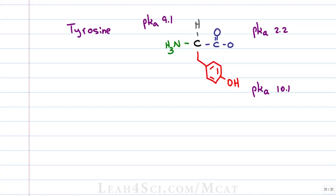To find the PI, we need to know exactly where the molecule will have a net charge of zero. We rank the pKa values from low to high: 2.2, 9.1, and 10.1. Remember: when the pKa is greater than the pH, the pKa grabs the proton for the molecule; when the pH is greater than the pKa, the solution grabs the proton from the molecule, meaning it's deprotonated. Comparing what the molecule looks like in between pKa values reveals a clear trend.